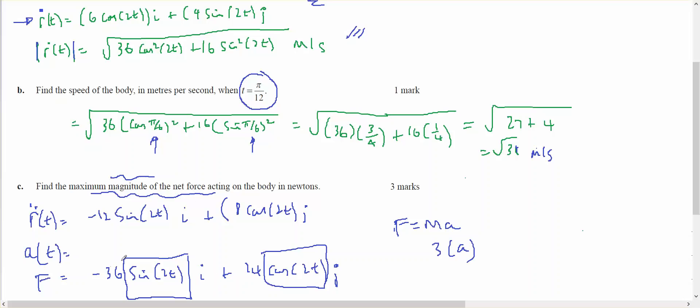So I think that the largest force will be negative 36 in the i. Therefore, the maximum magnitude of the force will be 36 newtons. And that will occur when the sine of 2t is equal to 1.